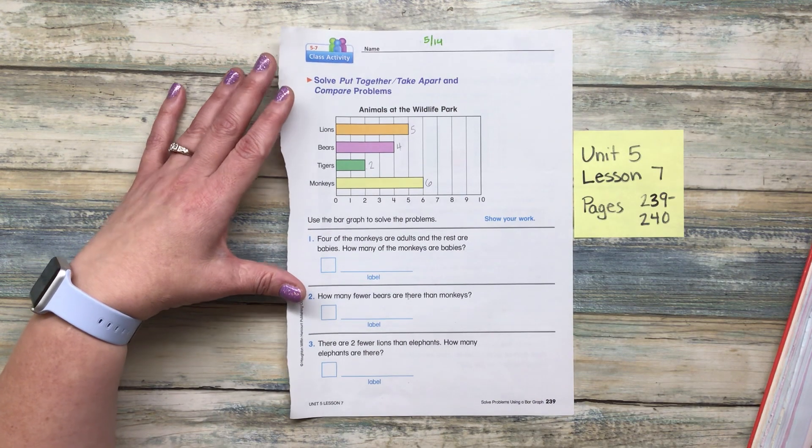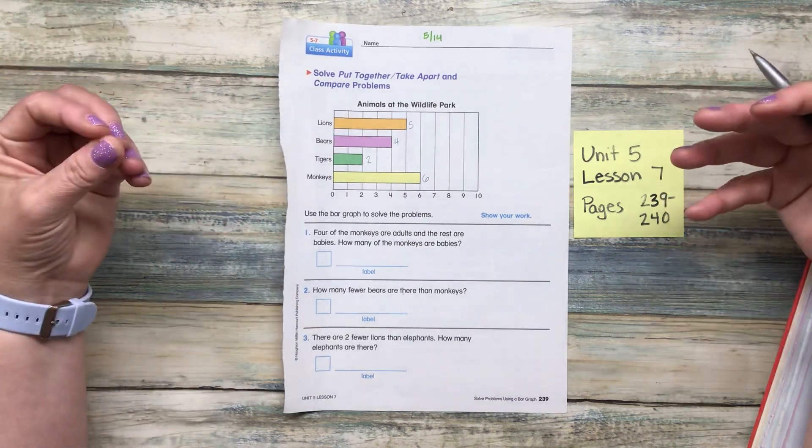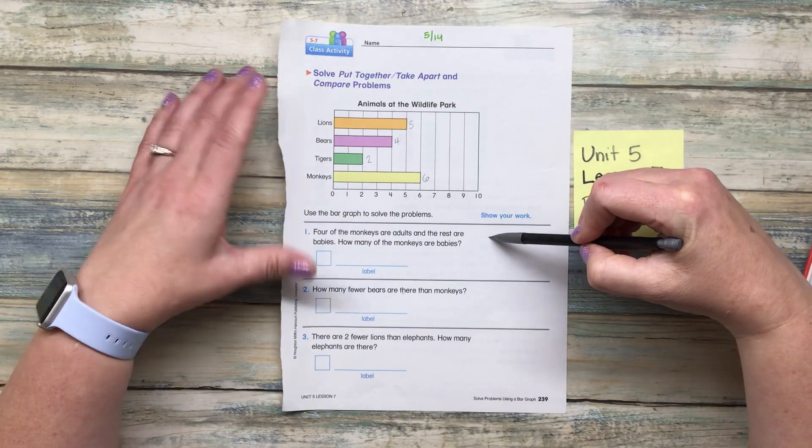This zoo has a lot of lions and a lot of monkeys. All right. Now that we are all prepped and ready with our numbers at the end, now we're going to answer these questions. We'll do this together.